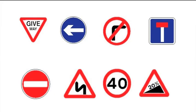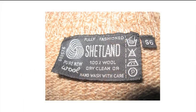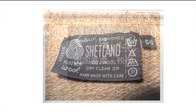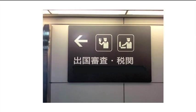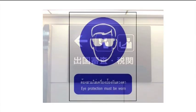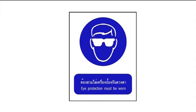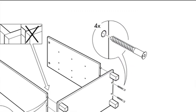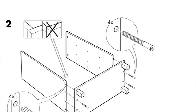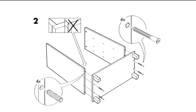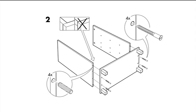Symbols are a simple and direct way of communicating and they are used all around us in everyday life. Whether they are on a sign at a foreign airport or on a set of instructions on how to use a new appliance, symbols have an instant impact on how we read and understand information.